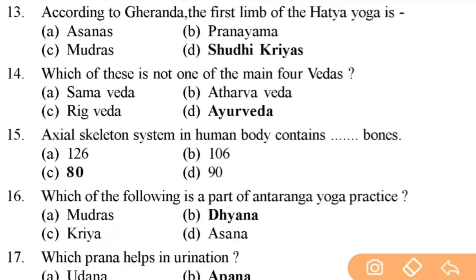These questions are equally important for UGC NET Yoga exam. According to Gherand Samhita, the first limb of Hatha Yoga is — right answer is D — very important question. Next: which of these is not one of the main four Vedas? Right answer is D — Ayurveda. Next: the axial skeleton system in the human body contains how many bones? Right answer is C — 80.